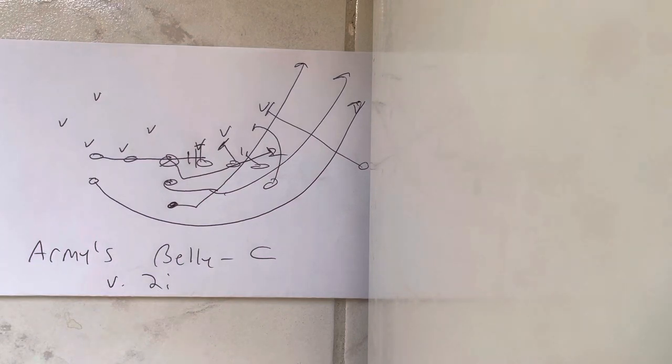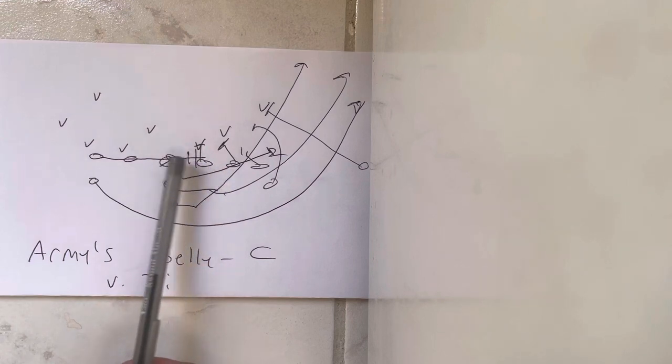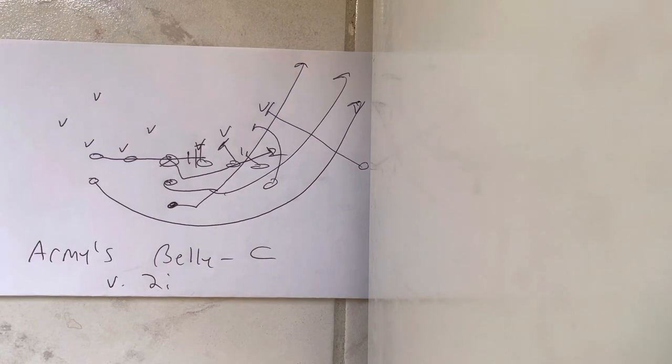But that's why you would run the belly C play, is against a 2i or a 1 against an A-gap defender. So the guard blocks down and then the center is the guy that blocks and traps number 2 in the count. Then the quarterback carries out the fake.